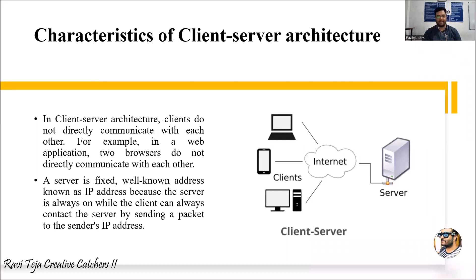The characteristics of client-server architecture: clients do not directly communicate with each other. Even though they are using the internet, they have no accessibility to directly communicate with each other. There will be a fixed server, and in order to communicate, whatever data you want to send, you need to send a request to the server first. Each and every server has its own IP address, and based on that IP address, clients can send a request to the server.